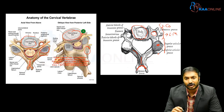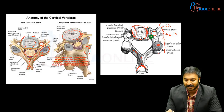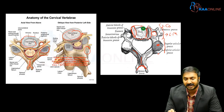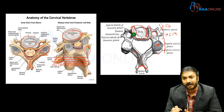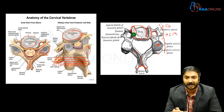The uncovertebral joint is a false joint — it has no synovium or capsule. It is a small bony elevation at the lateral aspect. When disc dehydration occurs, friction develops at the level of the uncovertebral joint, creating a hard osteophyte that then compresses the cord or the nerve root, causing myelopathy or radiculopathy.